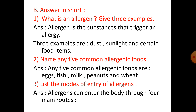Section B: Answer in short. Number 1: What is an allergen? Give 3 examples. An allergen is the substance that triggers an allergy. Three examples are dust, sunlight, and certain food items.